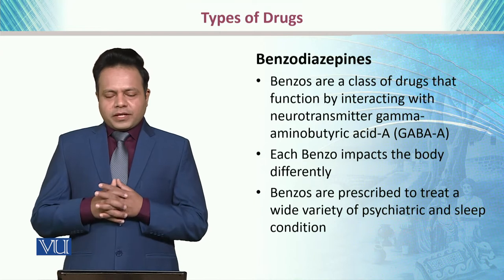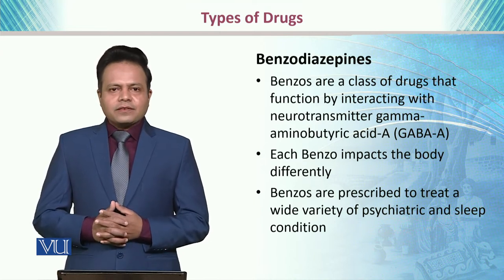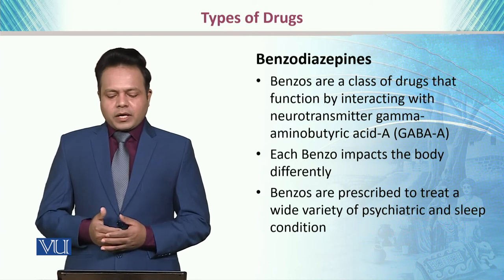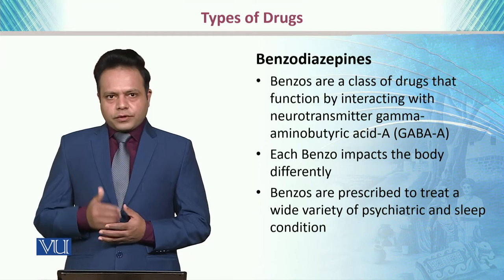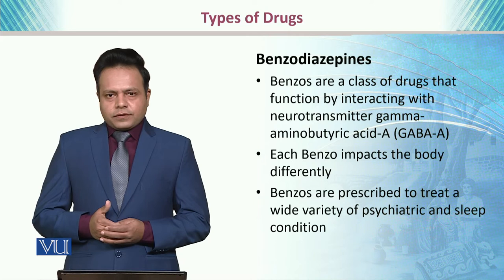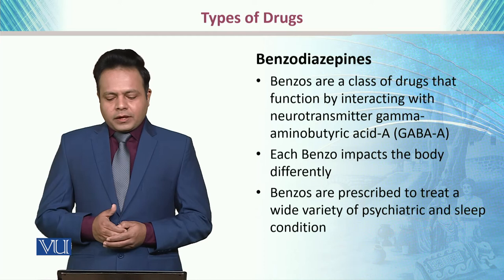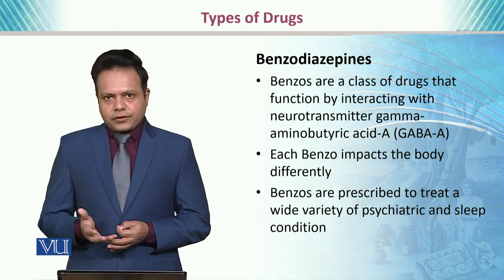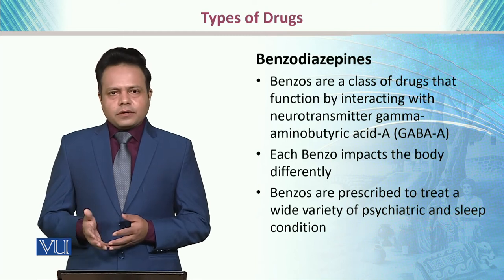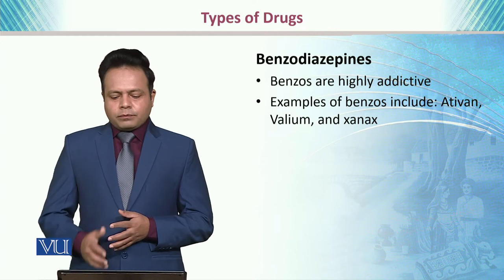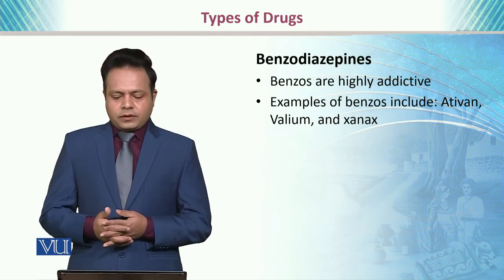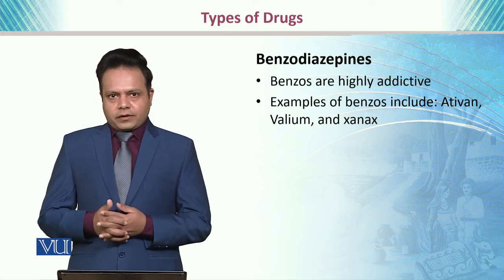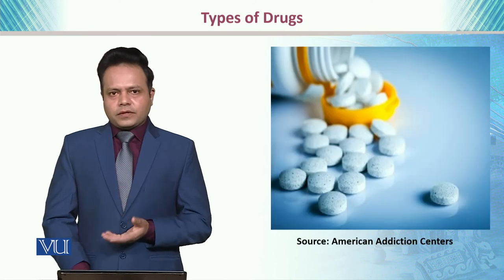Then we have benzodiazepines. Benzos are a class of drugs that function by interacting with the neurotransmitter gamma-aminobutyric acid, commonly known as GABA. Each benzo impacts the body differently, and benzos are prescribed to treat a wide variety of psychiatric disorders as well as sleep disorder conditions. Benzos are considered to be highly addictive. Examples of benzodiazepines include Ativan, Valium, and Xanax. Here is one of the examples of benzodiazepines.